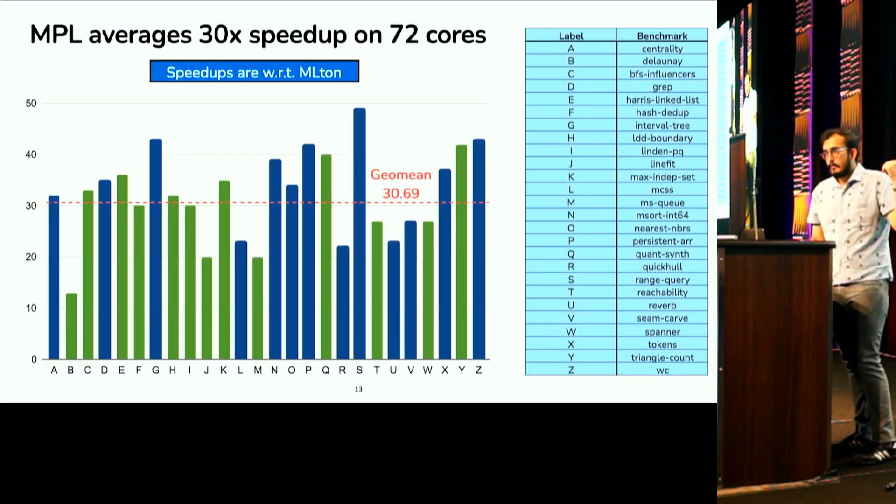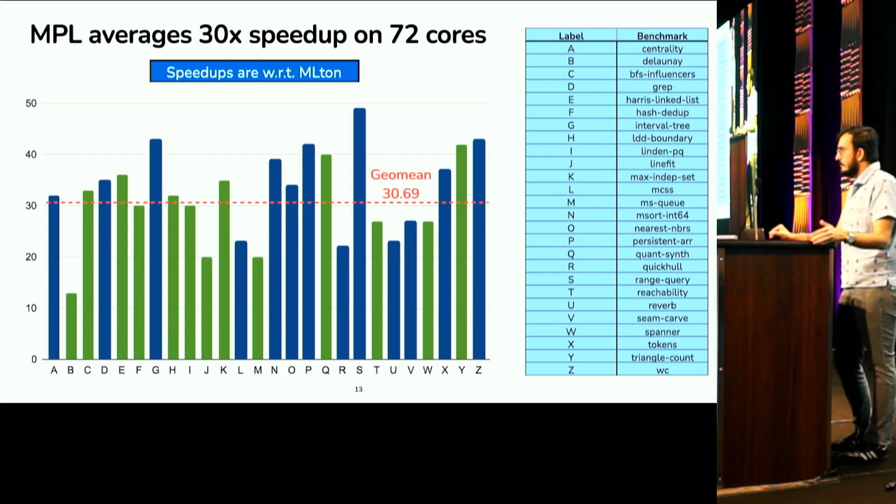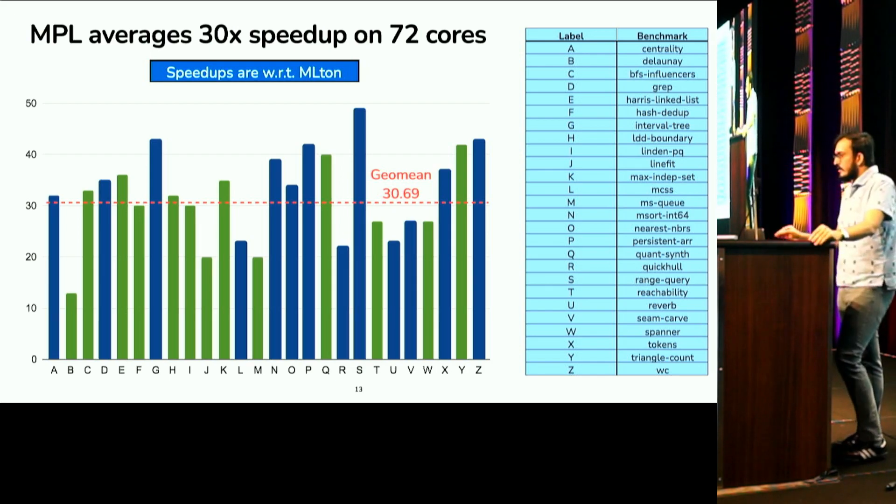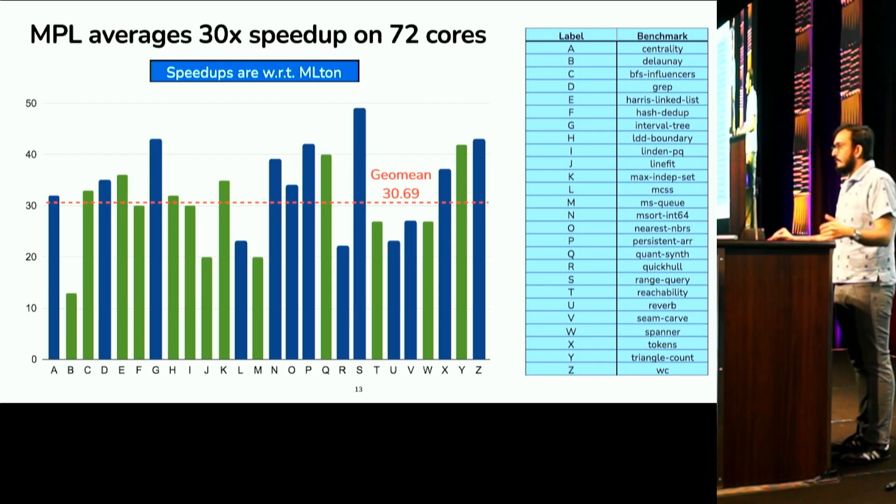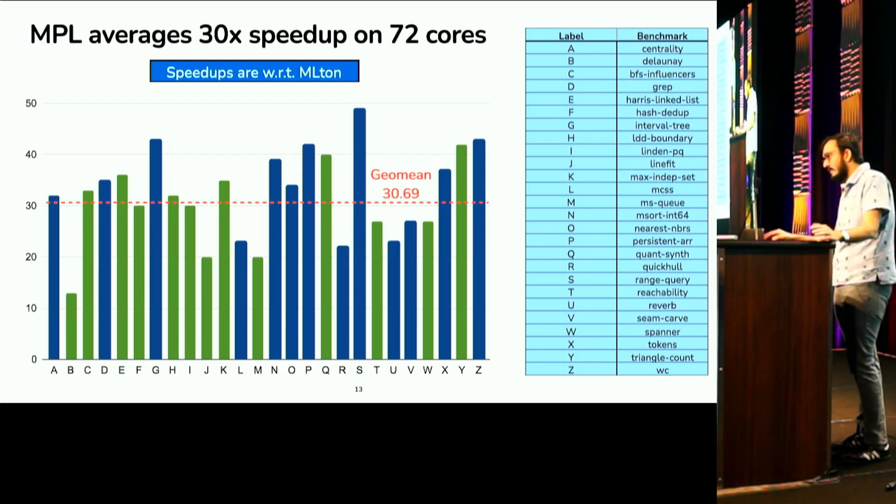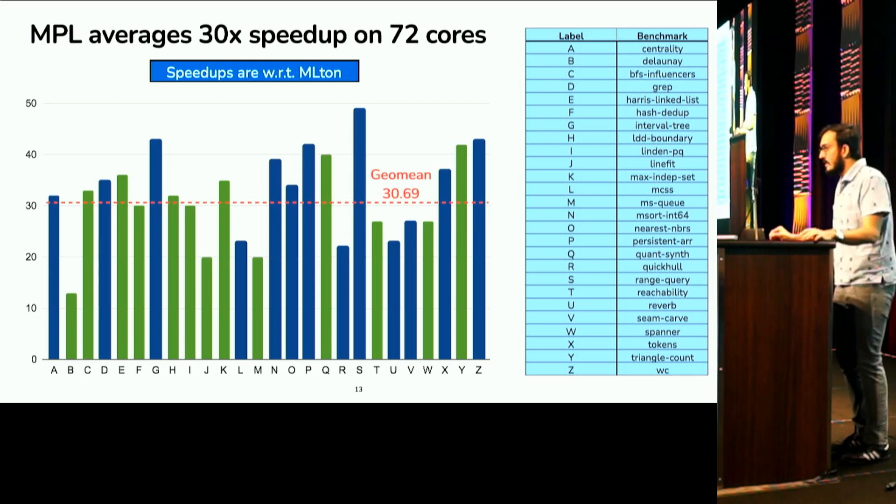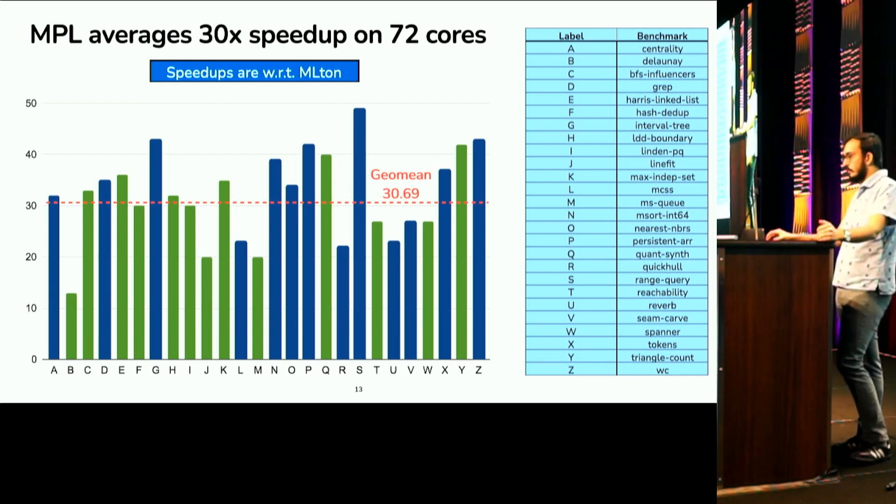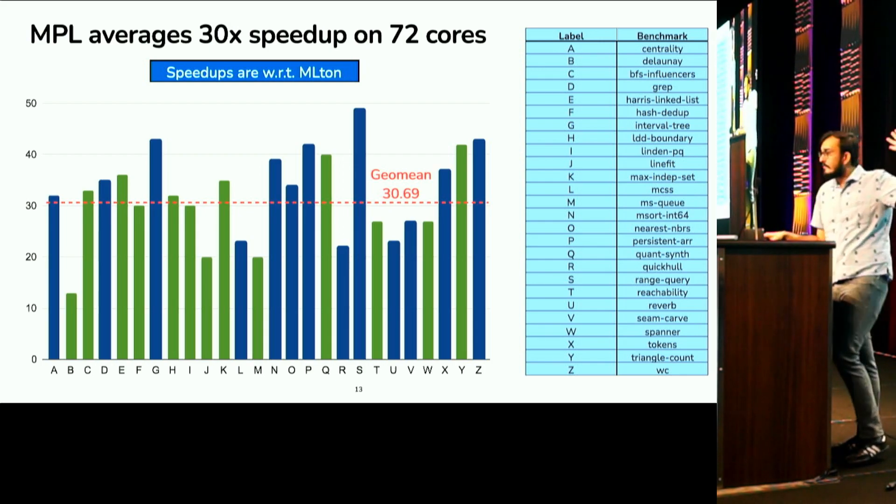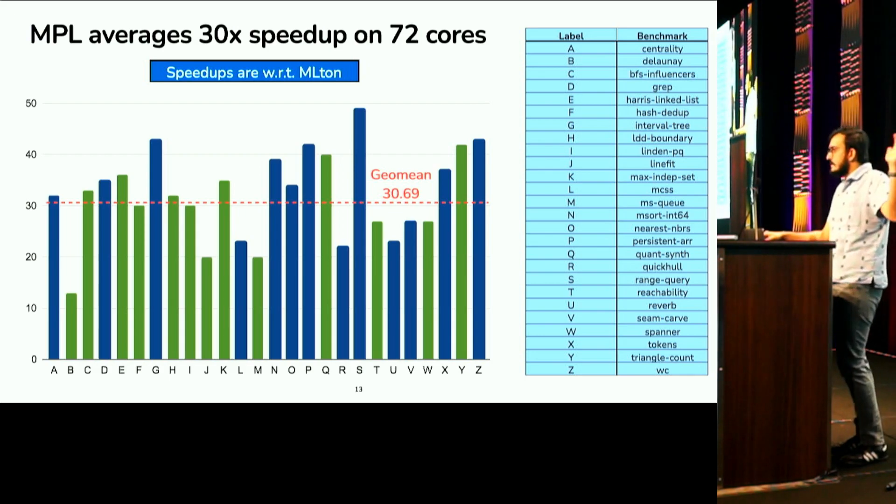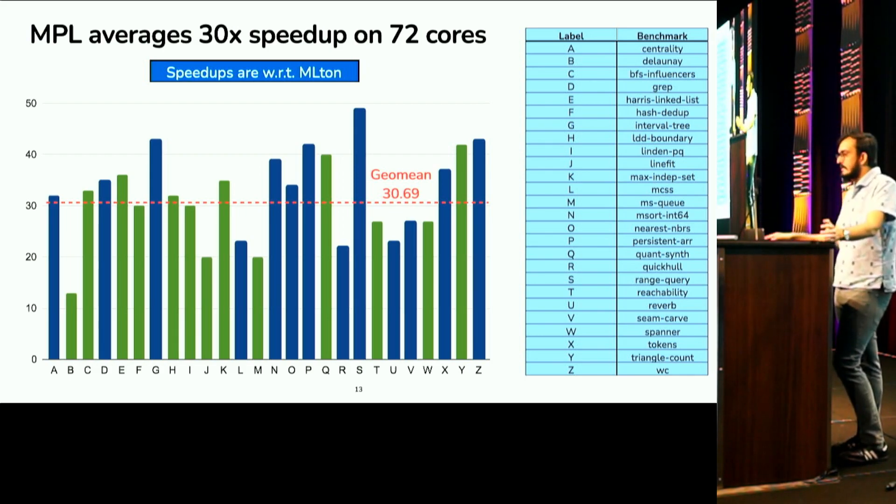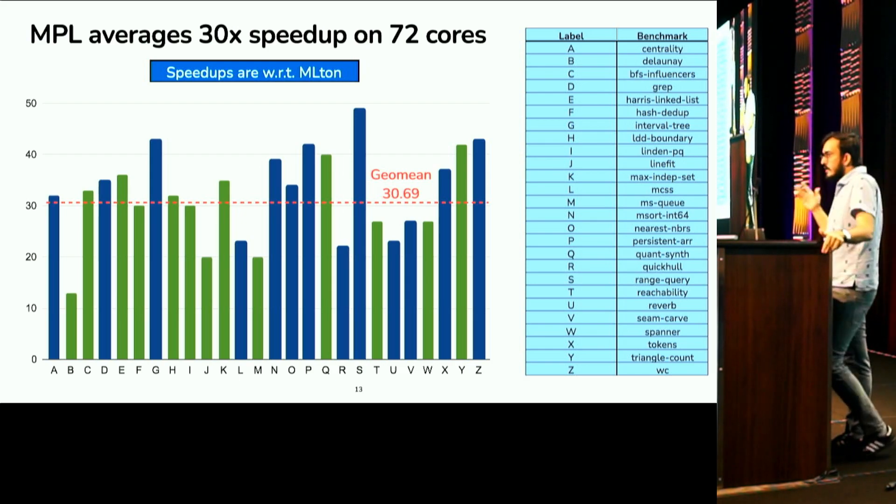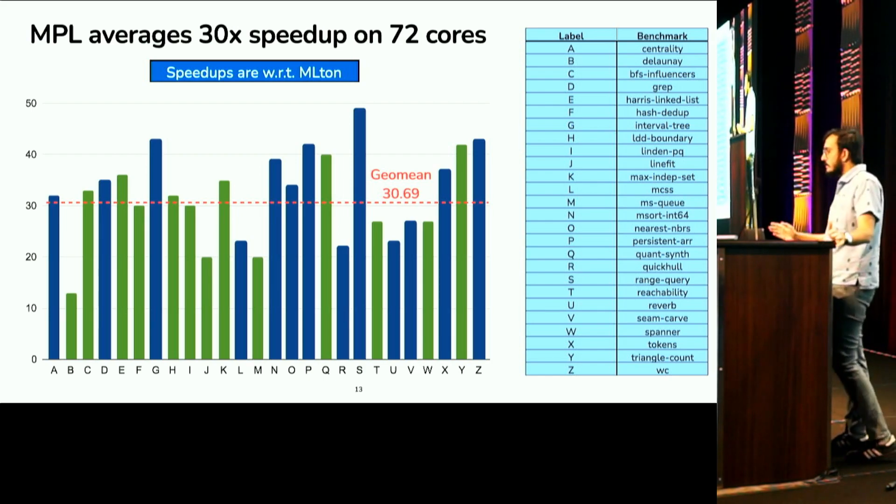So, we also wanted to test the efficiency of Maple on other benchmarks. So, we have a parallel benchmark suite of around a very good number, I think 26. And some of these benchmarks are taken from graph algorithms, some of them are numerical algorithms, some of these are actually concurrent data structures. And Maple gets good speed-ups. It gets an average speed-up of 30x on 72 cores. I have highlighted some of them in green. So, these green ones are entangled, and the blue ones are disentangled. And on average, we get 30 speed-ups. Again, the takeaway from this slide is that if you were to write these benchmarks in C++, you would get similar speed-ups.